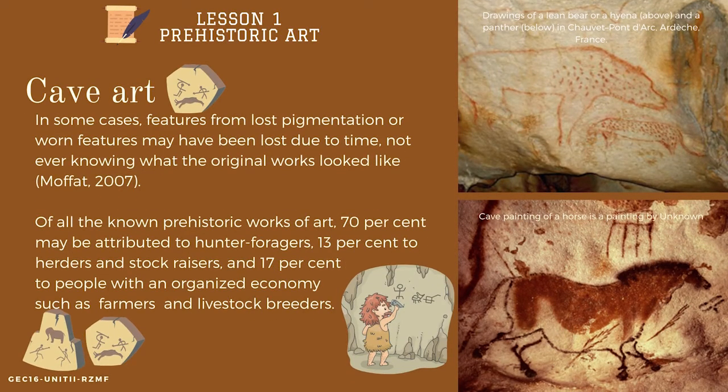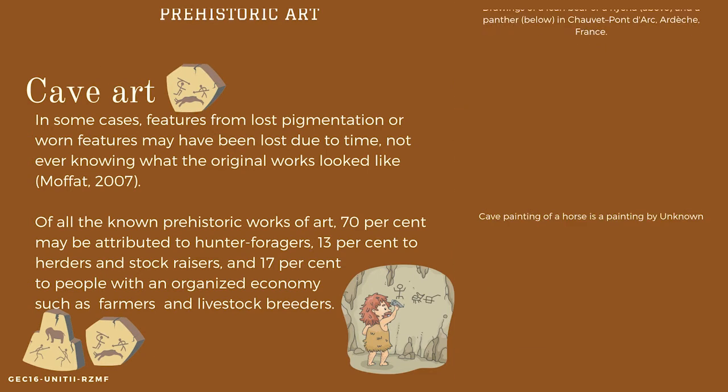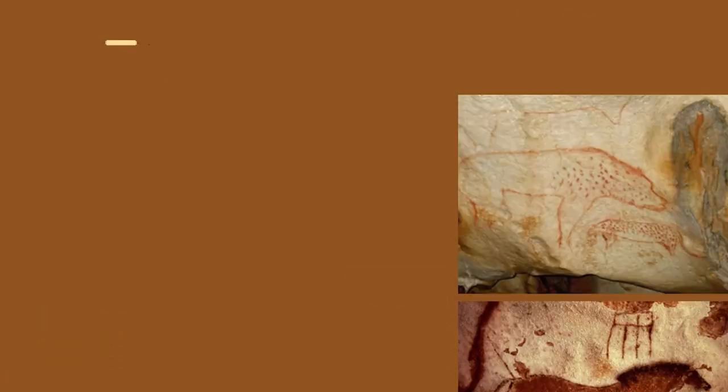In some cases, features from lost pigmentation or worn features may have been lost due to time, with no way of knowing what the original works looked like. Of all the known prehistoric works of art, 70% may be attributed to hunter-foragers, 13% to herders and stock raisers, and 17% to people with an organized economy such as farmers and livestock breeders.